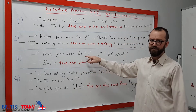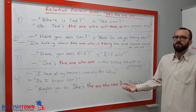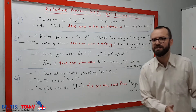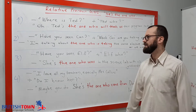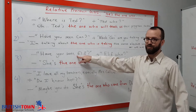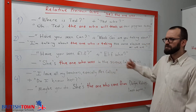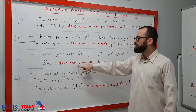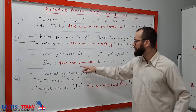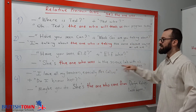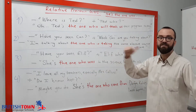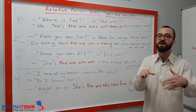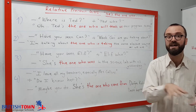Third dialogue: 'Have you seen Elif?' 'Elif who?' 'She is the one who was in the science lab with us yesterday.' So 'Elif kim?' — hangi Elif? She is the one who was in the science lab with us yesterday — bizimle dün fen laboratuvarında olan Elif.